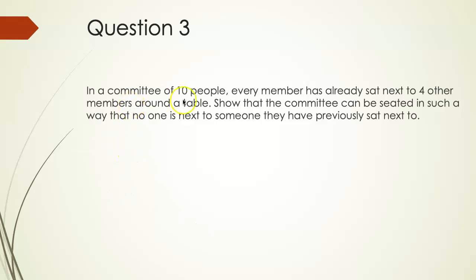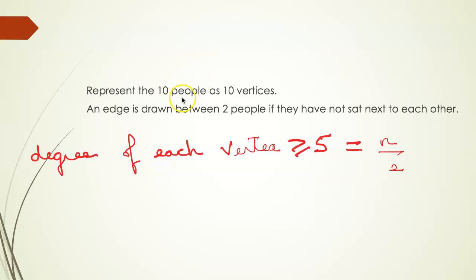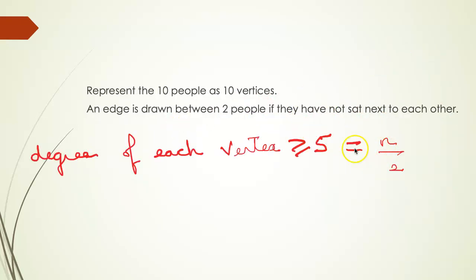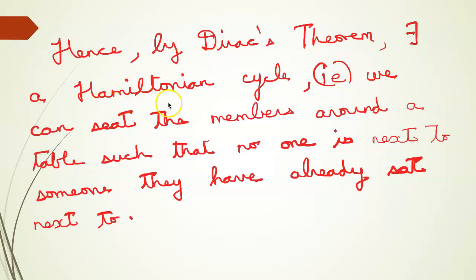Next question: in a committee of 10 people, every member has already sat next to 4 other members around the table. Show that the committee can be seated such that no one is next to someone they have previously sat next to. Represent the 10 people as 10 vertices, and draw an edge between two people if they have not sat next to each other. The degree of every vertex will be greater than or equal to 5, since each member has sat with only 4 others, meaning the remaining connections are at least 5, which equals n/2 for n equals 10. By Dirac's theorem, there exists a Hamiltonian cycle — meaning we can seat the members around a table such that no one is next to someone they have already sat next to, and no vertex is repeated.